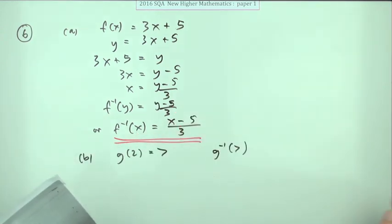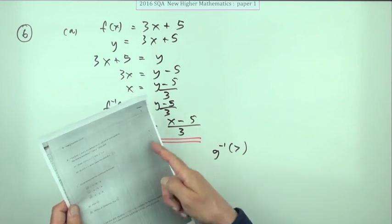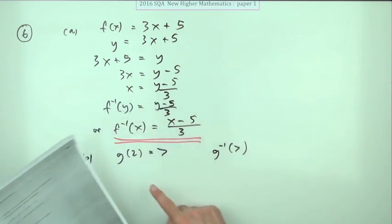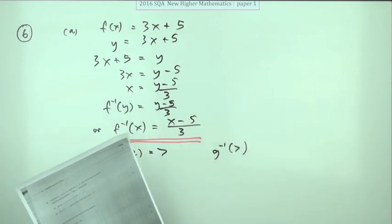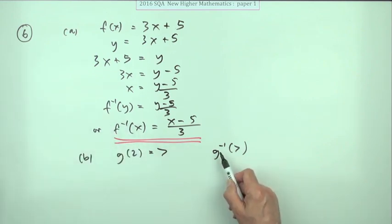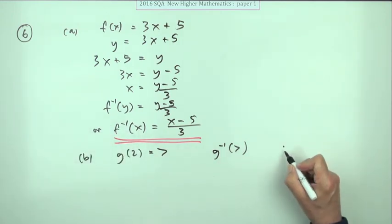And this last question is really just a statement of the obvious for one mark. If g(2) = 7, what's the value of the inverse of g acting on 7? Well it's simple.